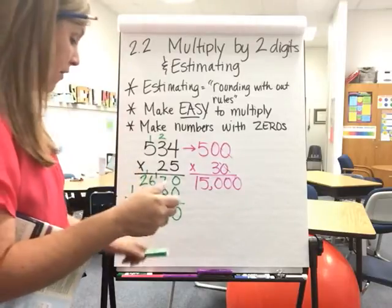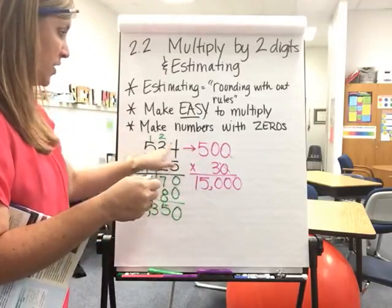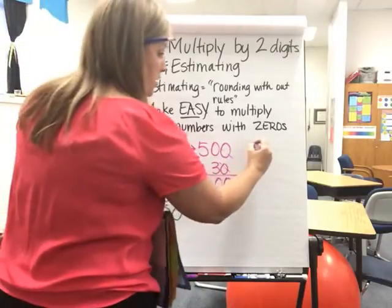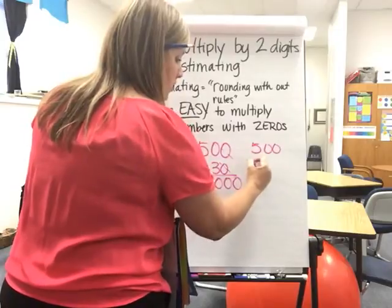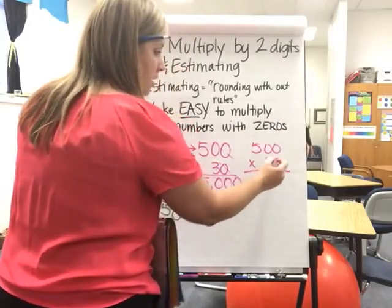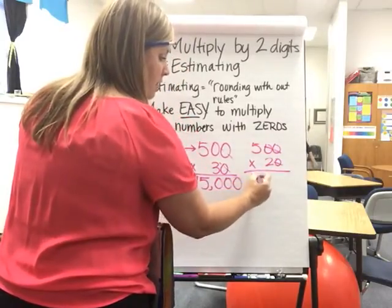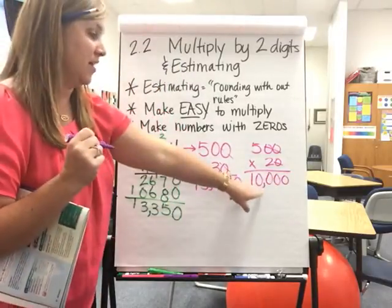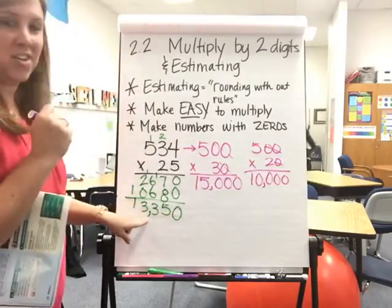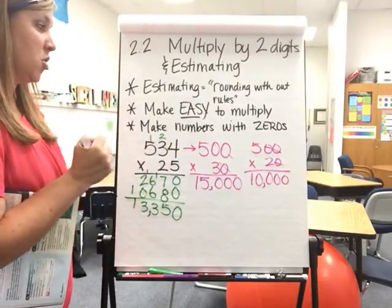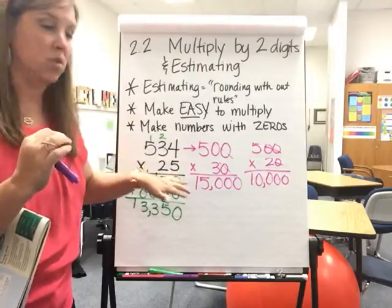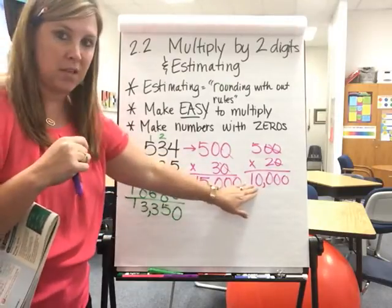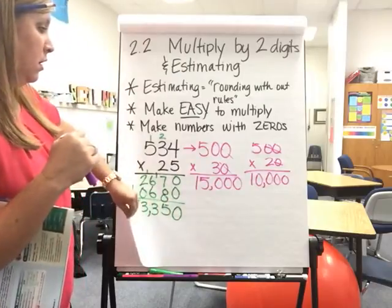Yes, they are a couple thousand off. But again, you went up and you went down. So if you were to do it 500 times 20, mark your zeros off. 5 times 2 is 10. Adding your three zeros. And again, if you were to go down that way, so there's 10,000 and here's 13,000. So either way is fine. You just have to make sure it's a reasonable. So it's still 2,000 off. Still 3,000 off.